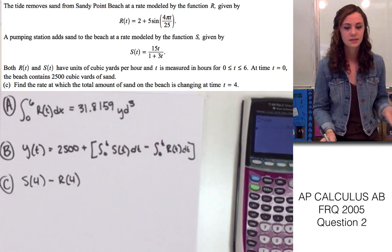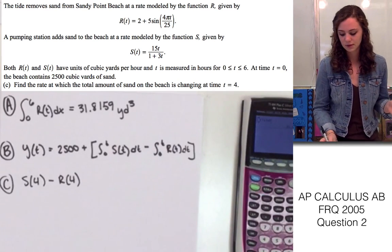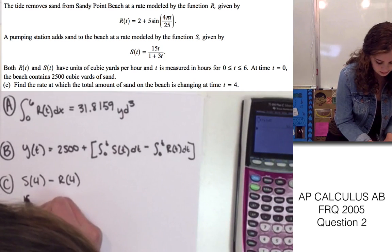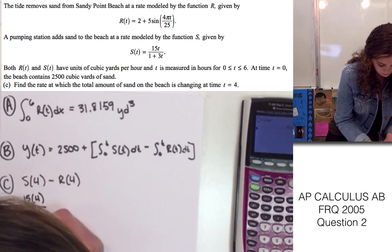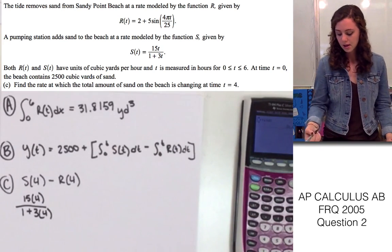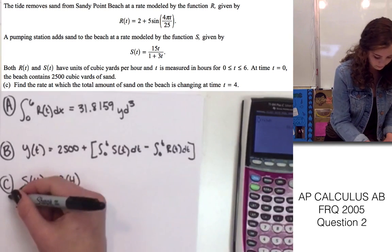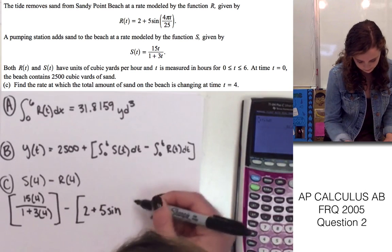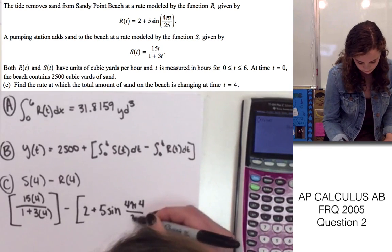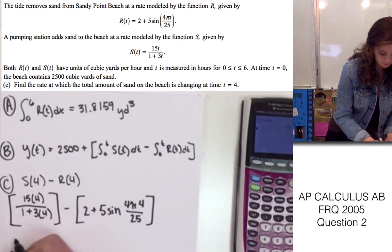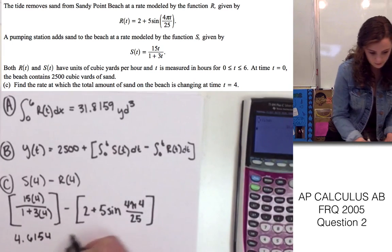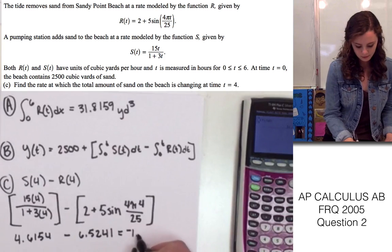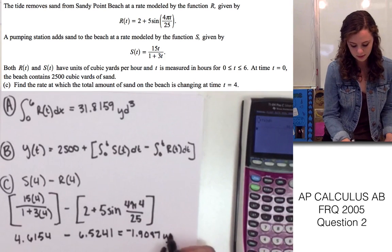We're subtracting because r of 4 is the rate at which it's being removed, and s of 4 is going to be the rate at which it's being pumped onto the beach. We could just put this in the calculator, but I'll write it out so it's more clear. I just plugged 4 in for the equation s of t and then we'll find the value of that and subtract r of 4 from that. This ends up being 4.6154 minus 6.5241, which will give us negative 1.9087 yards cubed per hour.